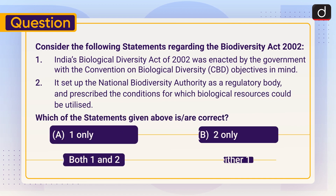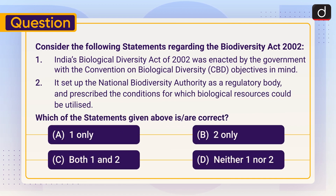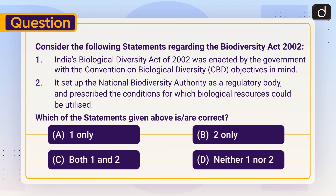Now it's time for the practice question. Consider the following statements regarding the Biodiversity Act 2002. Statement 1: India's Biological Diversity Act of 2002 was enacted by the government with the Convention on Biological Diversity objectives in mind. Statement 2: It set up the National Biodiversity Authority as a regulatory body and prescribed the conditions for which biological resources could be utilized. Which of the statements given above is or are correct? One only, two only, both one and two, or neither one nor two? Send the answer to this question in the comment section.